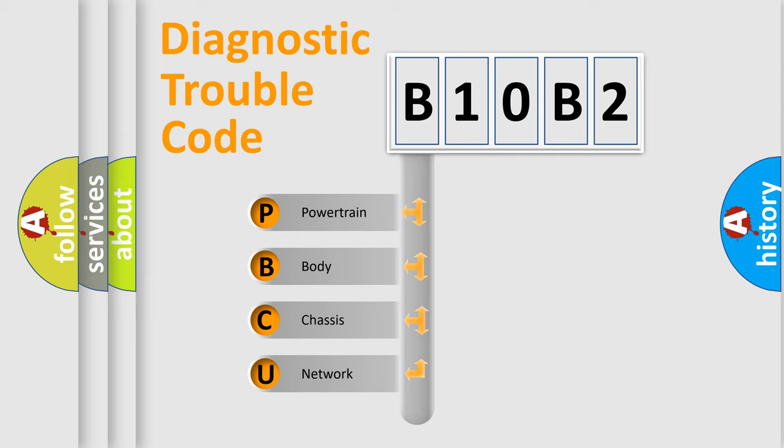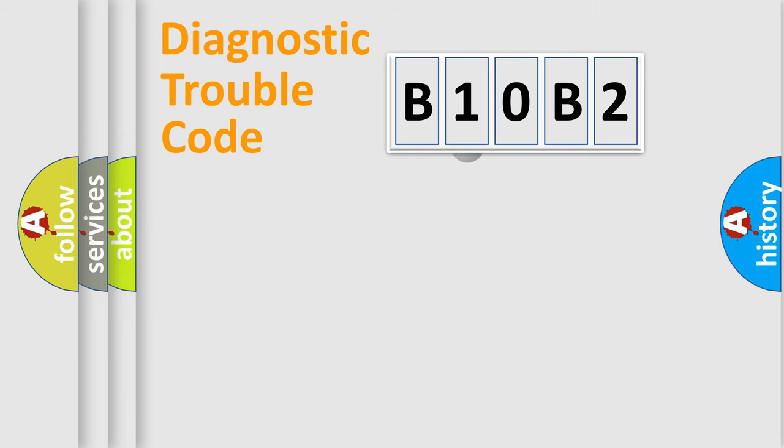We divide the electric system of automobiles into four basic units: Powertrain, Body, Chassis, and Network. This distribution is defined in the first character code.